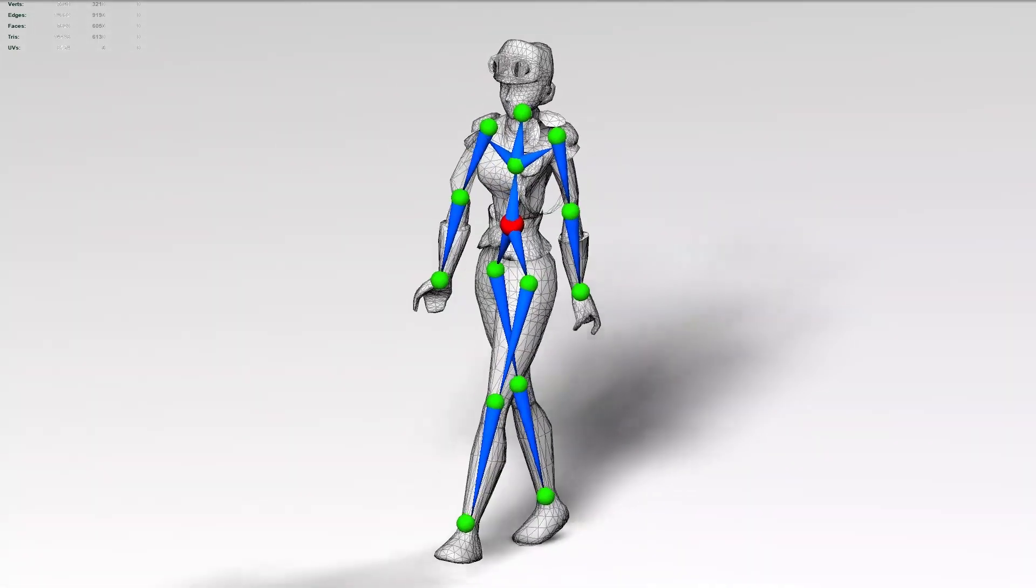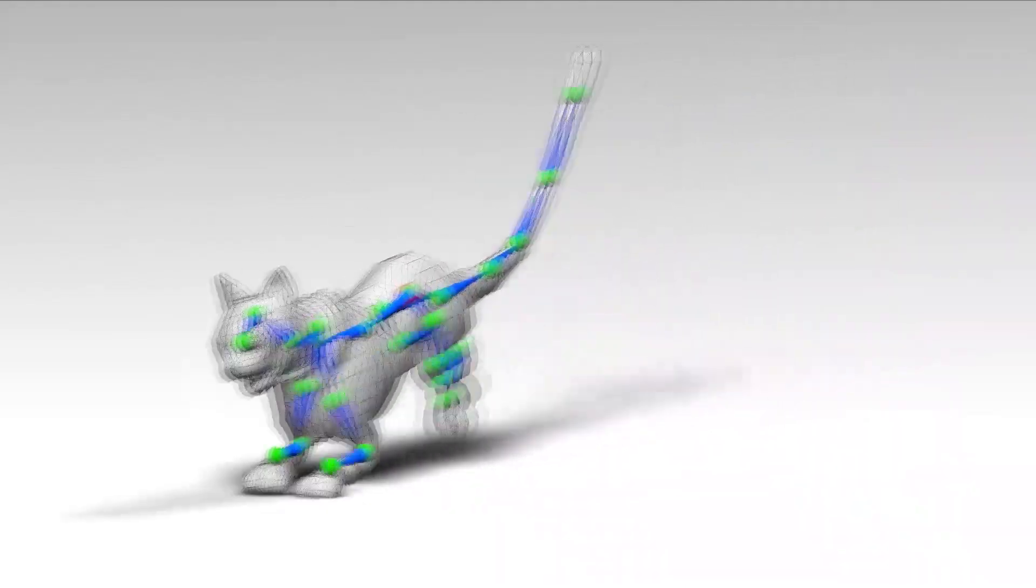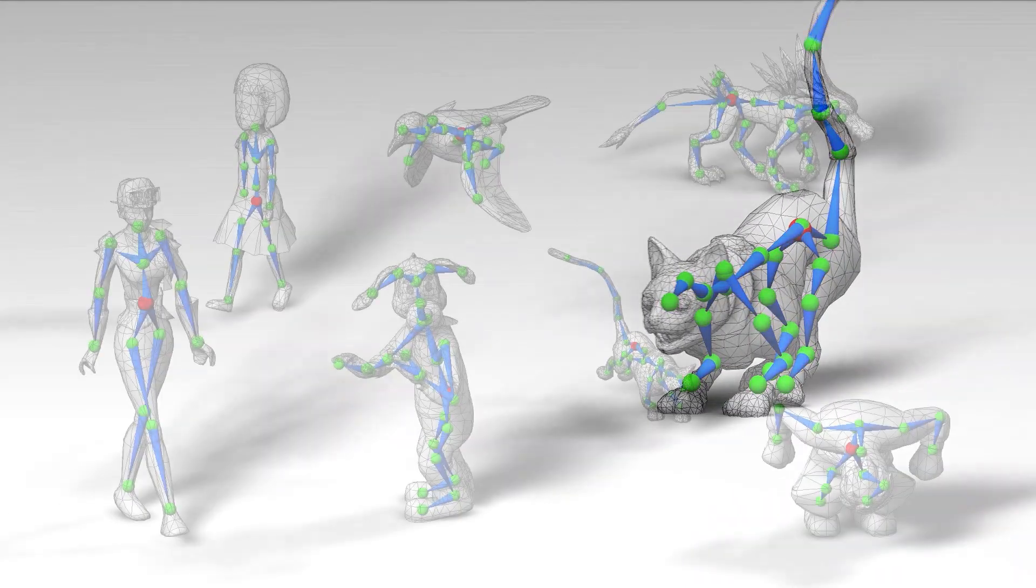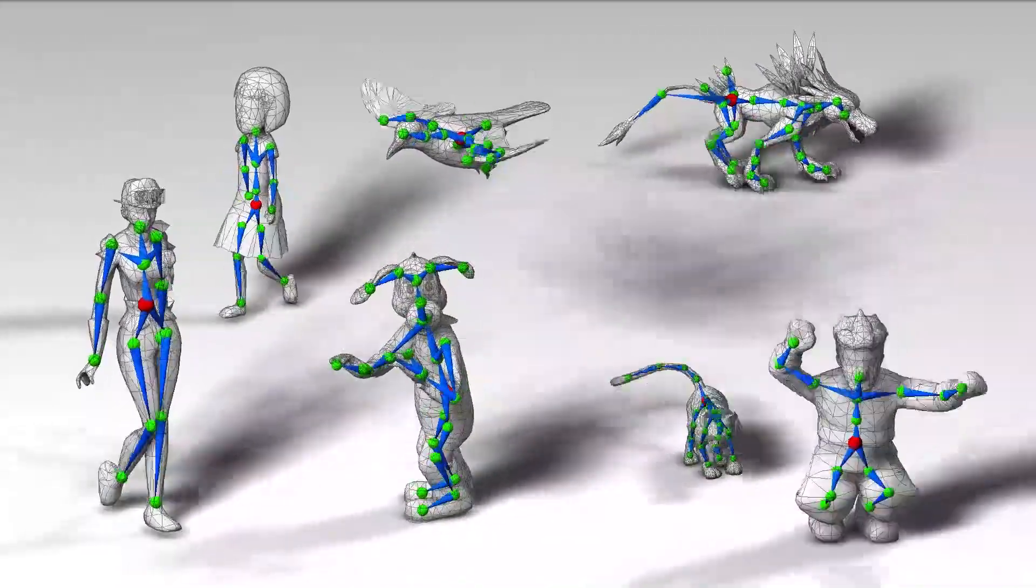Testing on a wide variety of characters, realistic, cartoony, humanoid, quadruped, and others, our predicted skeletons are consistently robust. We can apply automatic motion transfer techniques to animate them all together.